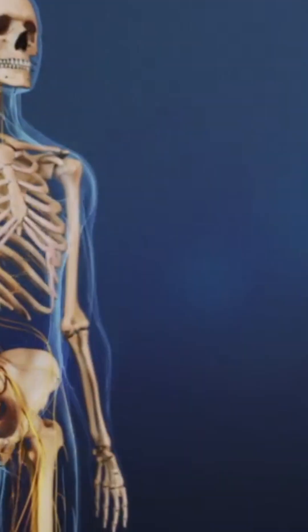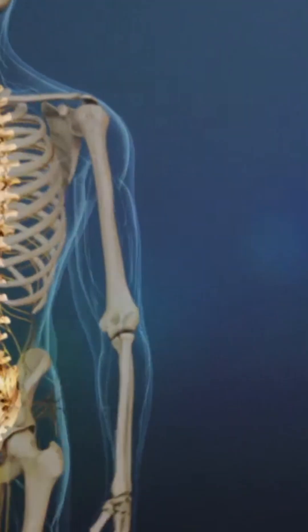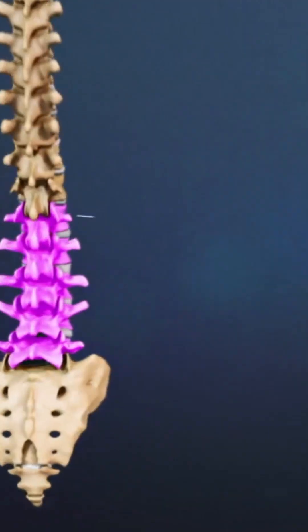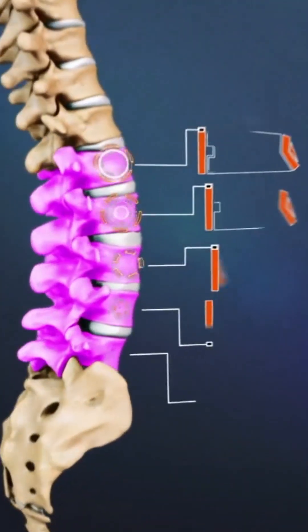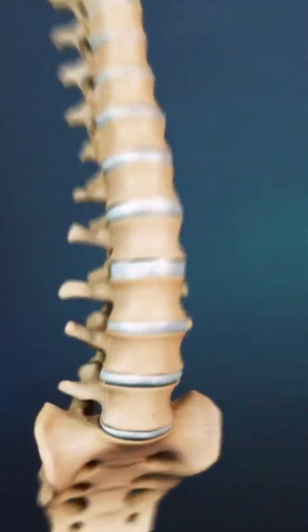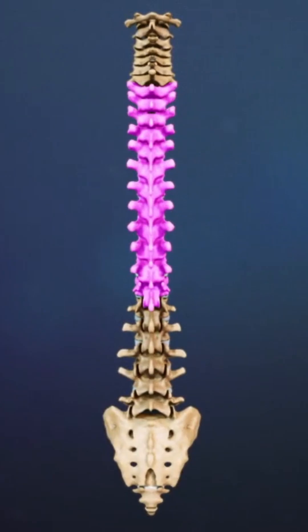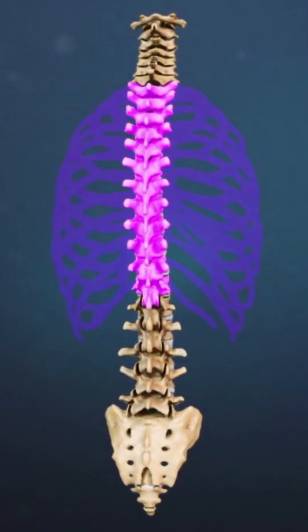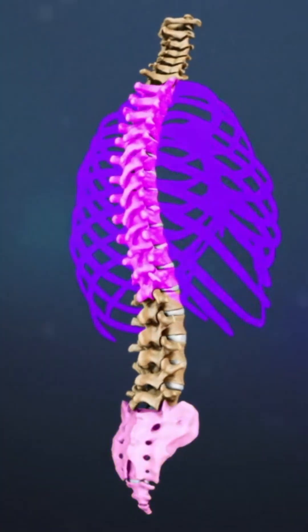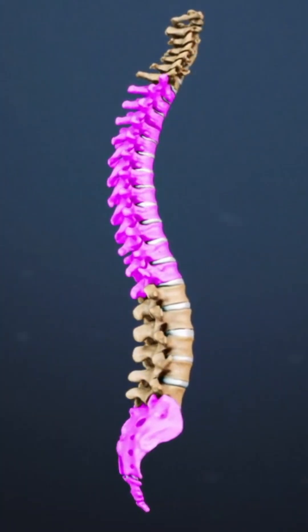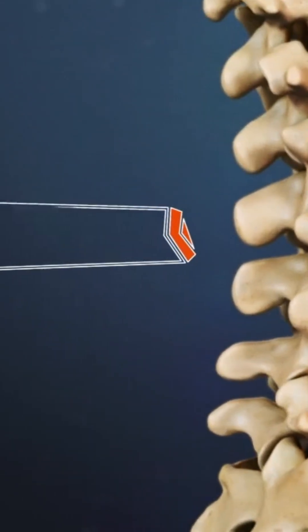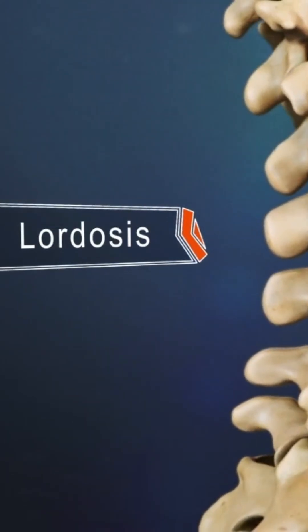The lumbar region of the spine, more commonly known as the lower back, consists of five vertebrae labeled L1 through L5. The lumbar region is situated between the thoracic or chest region of the spine and the sacrum. The lumbar spine typically has a slight inward curve known as lordosis.